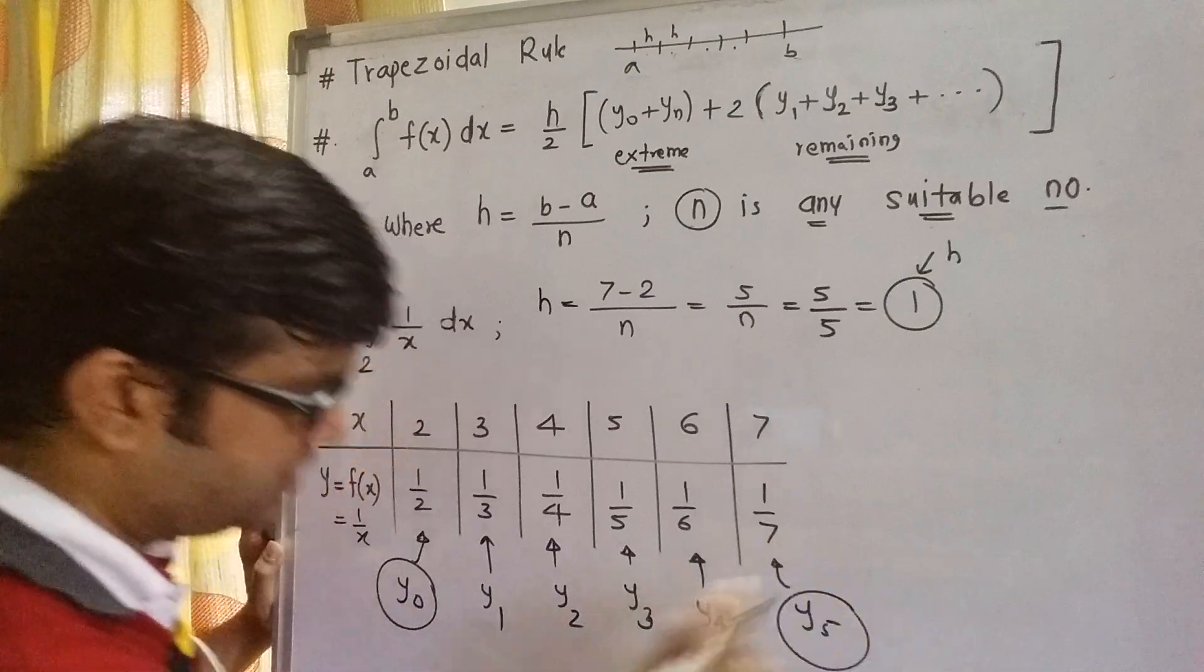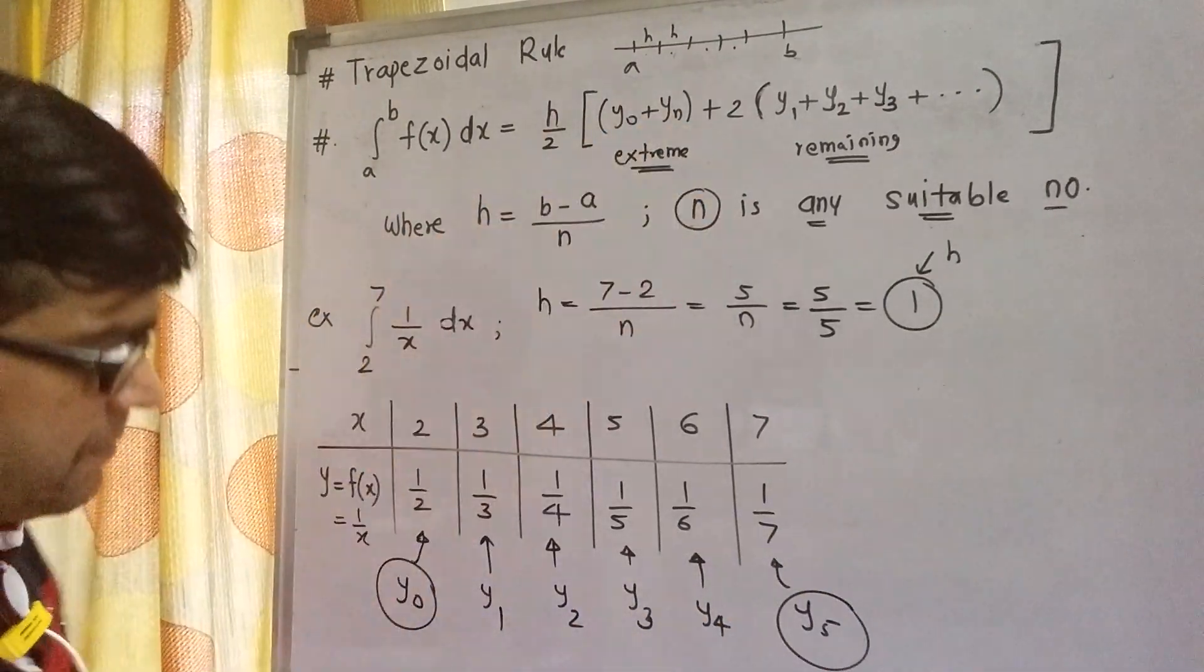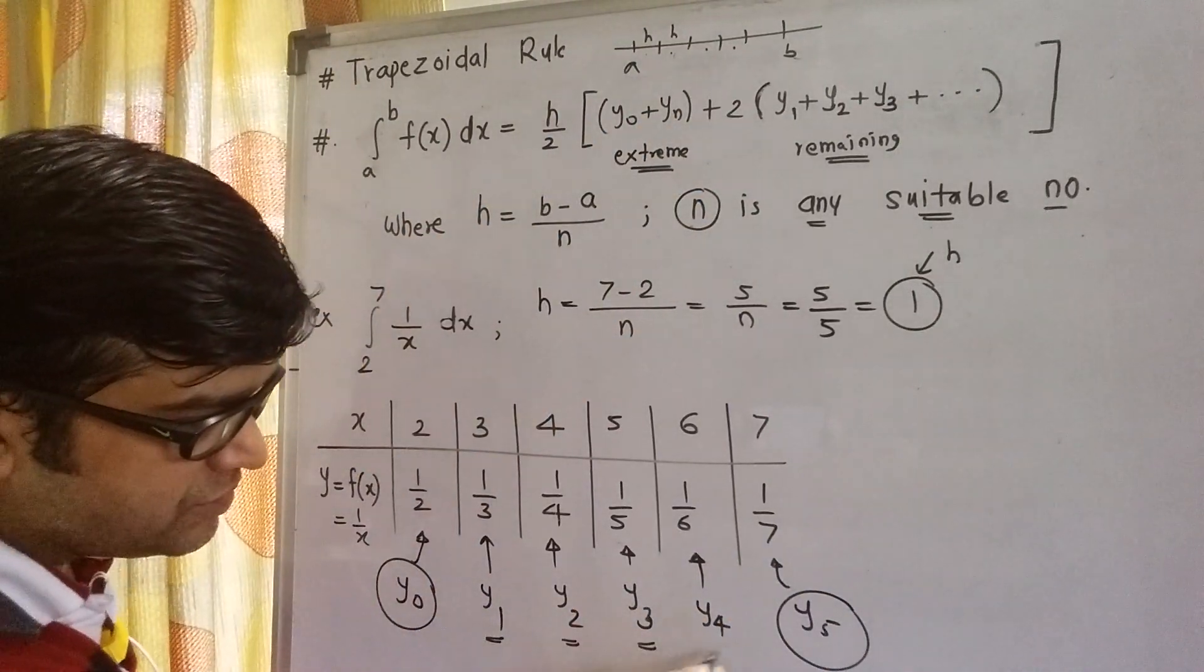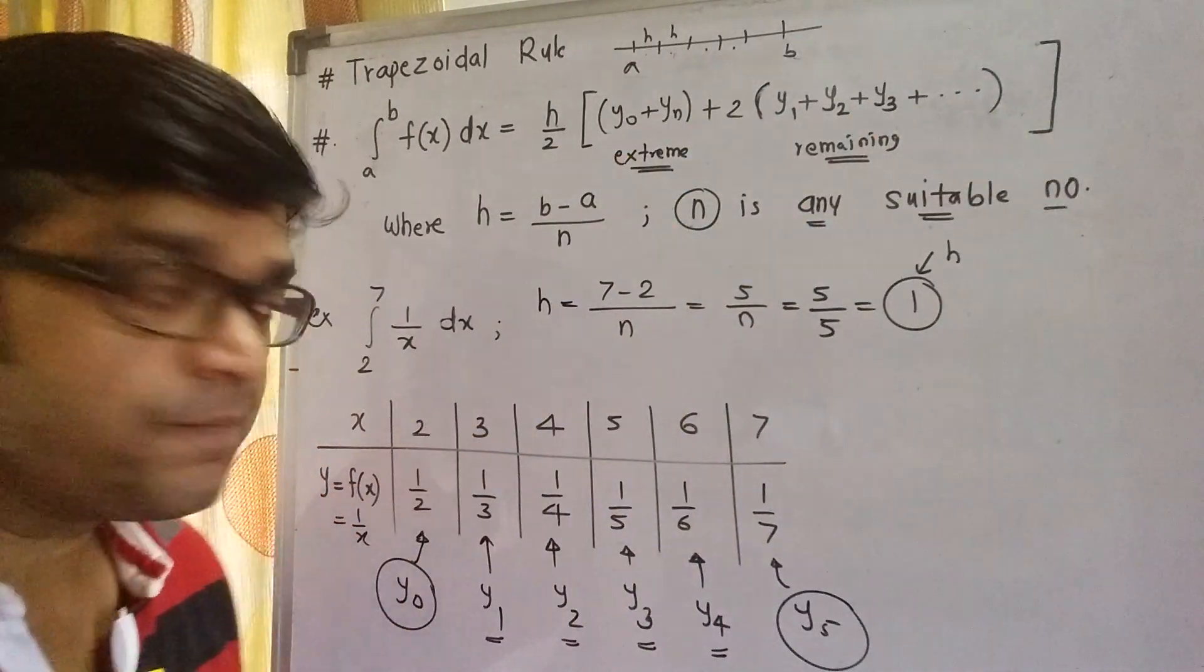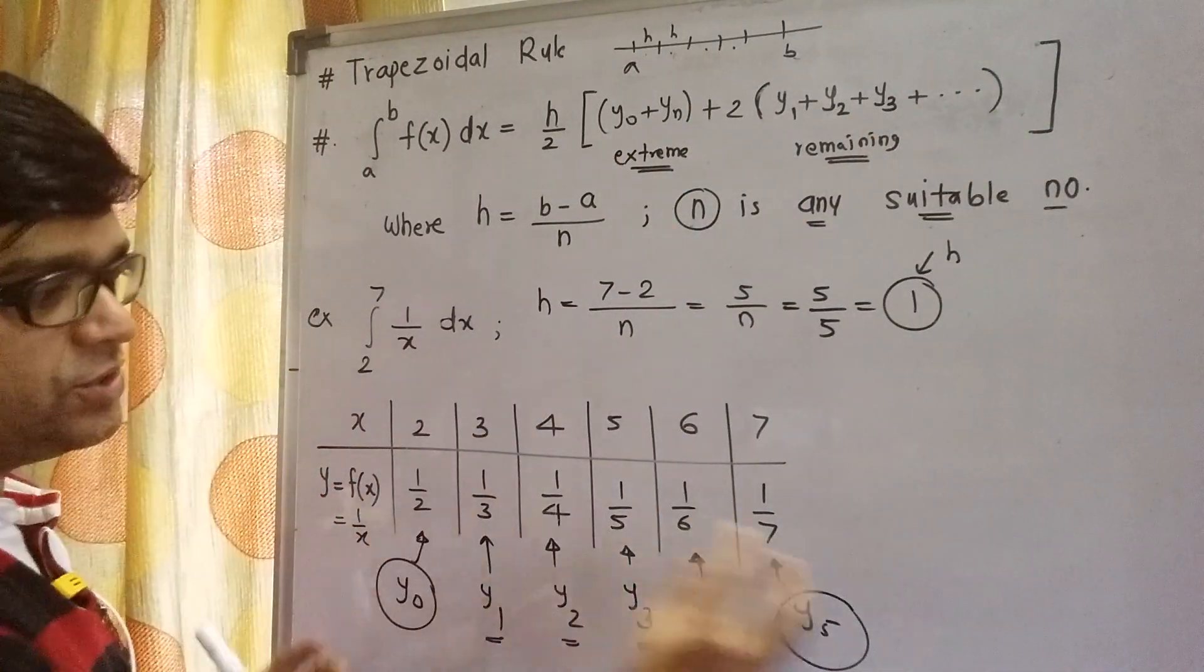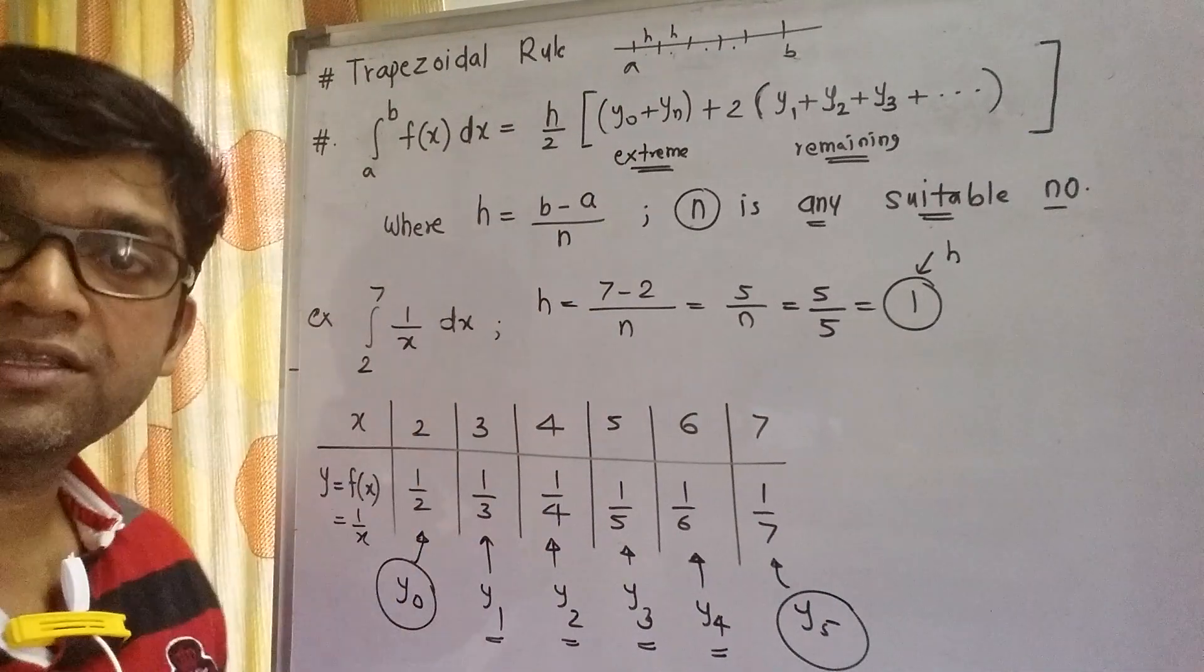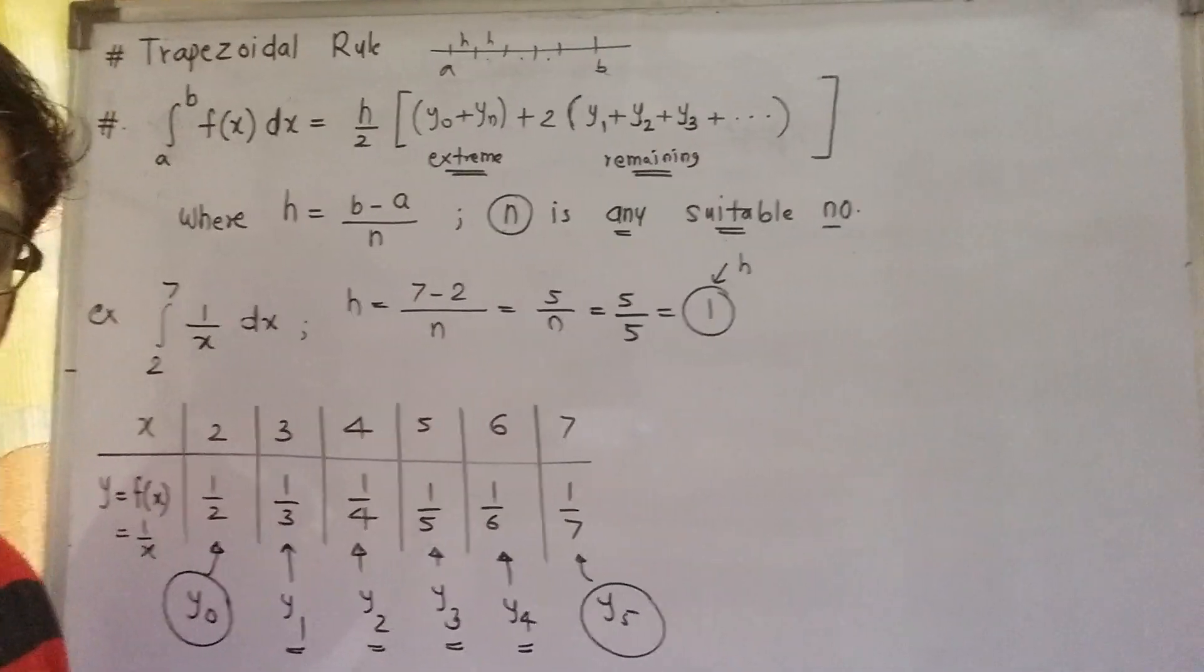Now y0 and y5, these are extreme ordinates, and y1, y2, y3, y4, these are remaining ordinates. So what we can do is we can substitute these ordinate values in the trapezoidal rule. So let us see what we get.